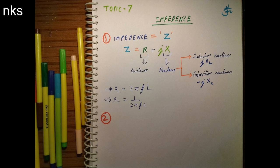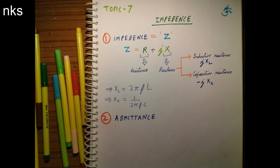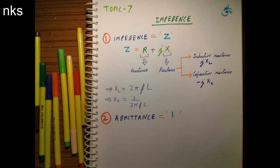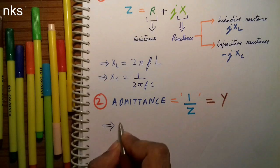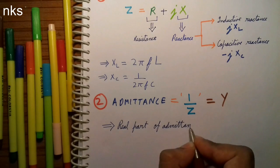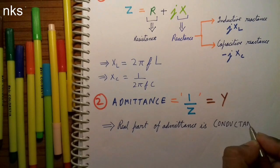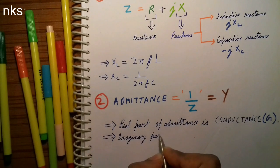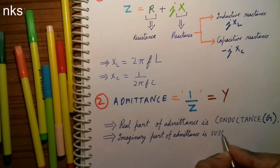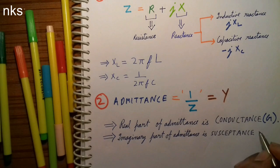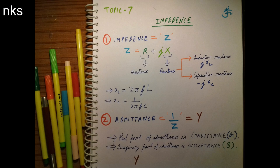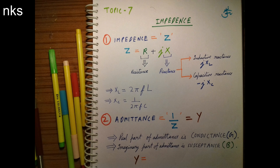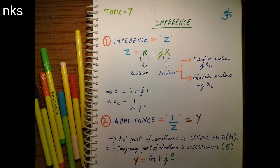Now let us see admittance. Admittance is equal to 1 divided by Z, which is denoted by Y. The real part of admittance is conductance, denoted by G. The imaginary part of admittance is susceptance, denoted by B. So admittance can be written as Y is equal to G plus Jb.